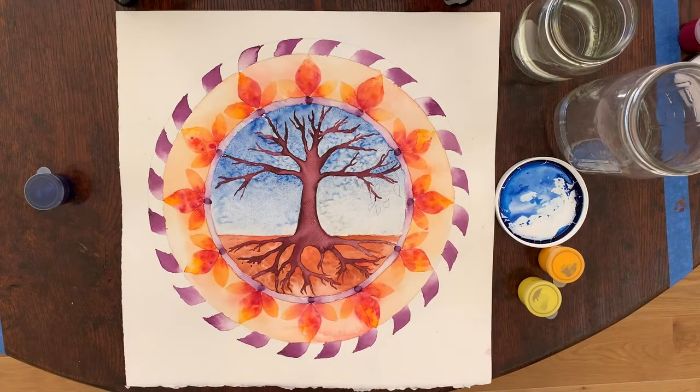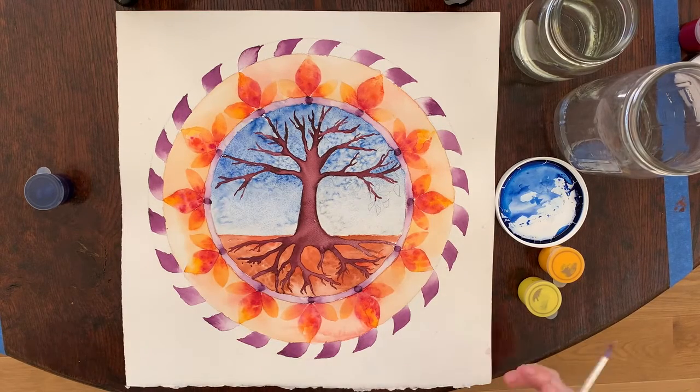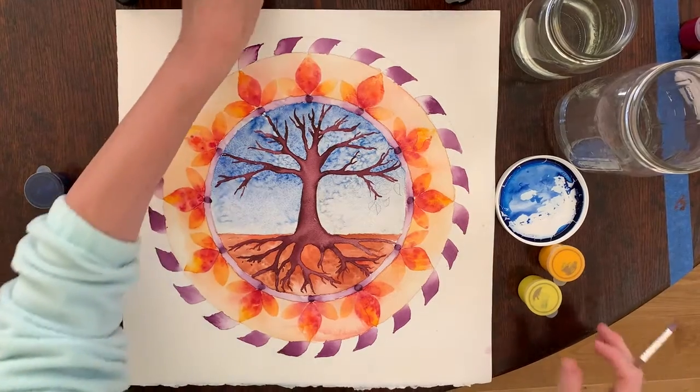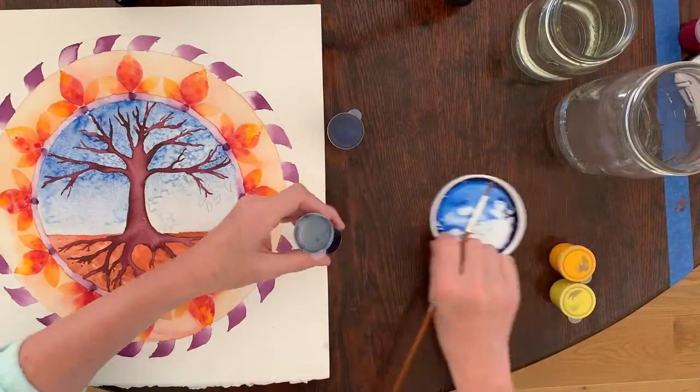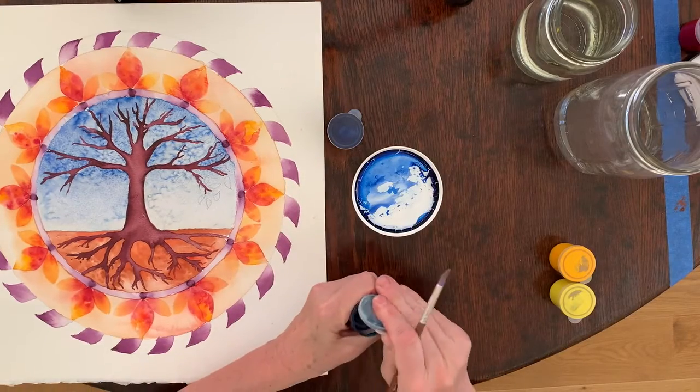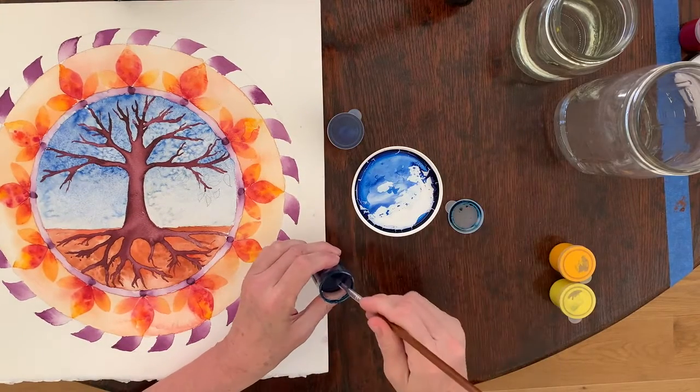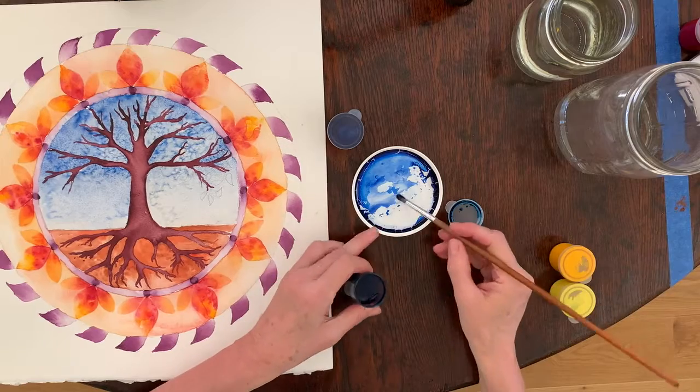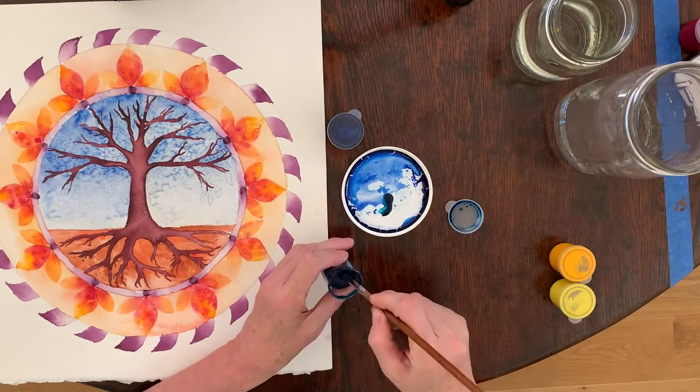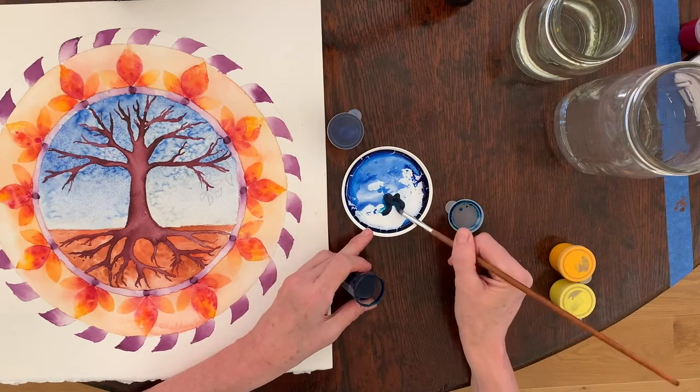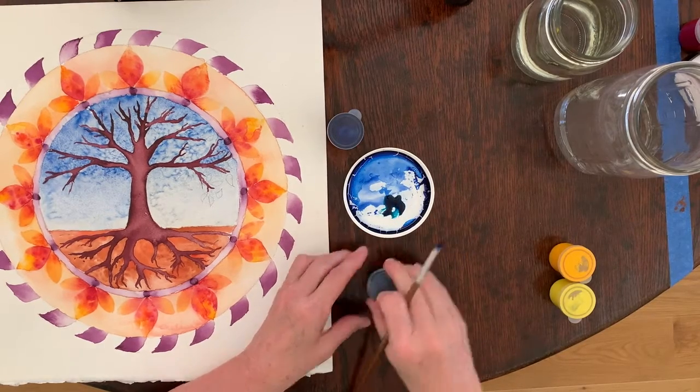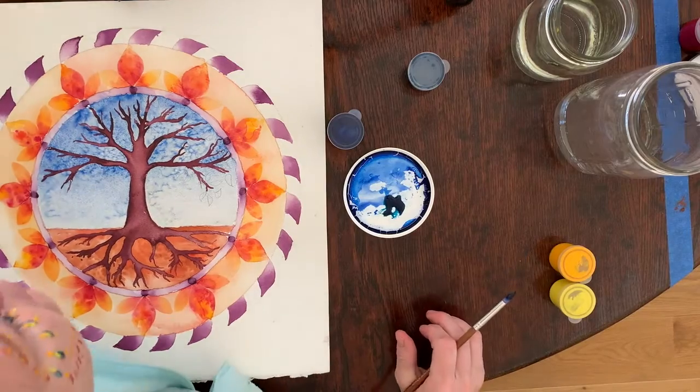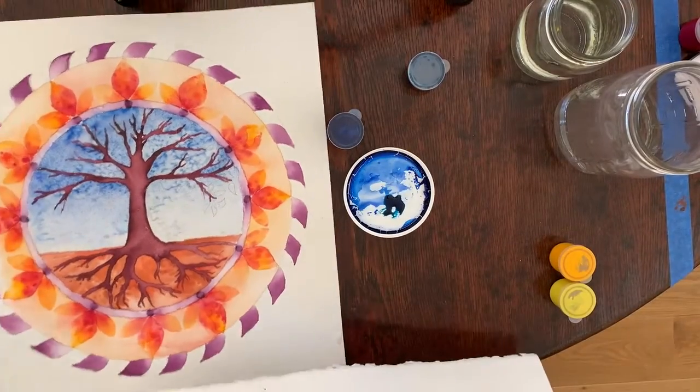We have come to the moment of painting our leaves and our first step in painting leaves is going to be creating green. I'm just going to encourage you to use some blues and yellows. We also have this really lovely teal blue green color, so make sure you have a scrap of paper to test on.